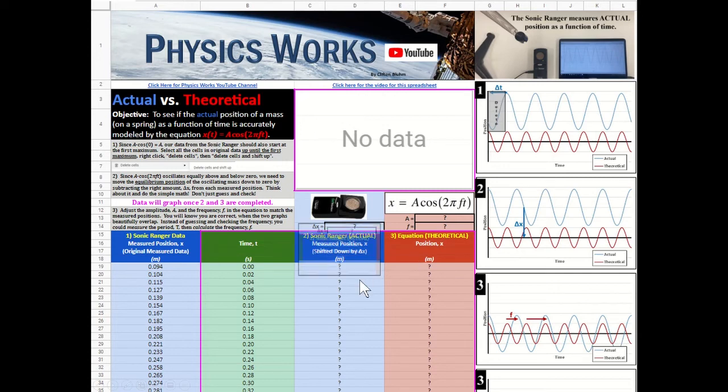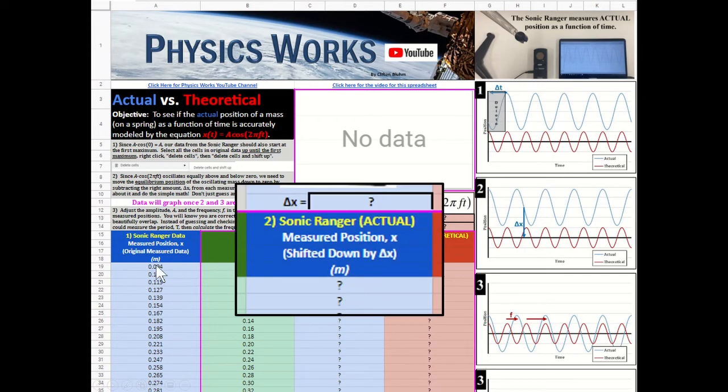So what we're going to do is type in a formula that takes what is in this cell here and subtracts this number there. So what's in cell A19 and we're going to subtract what's in this cell which was D14. But notice I put dollar signs there.